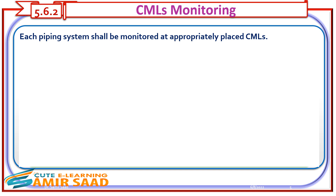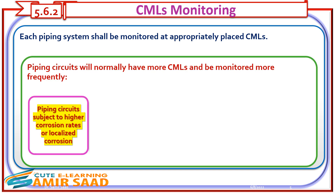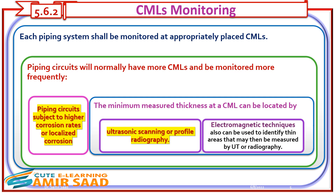Each piping system shall be monitored at appropriately placed CMLs. Piping circuits will normally have more CMLs and be monitored more frequently if they are subject to higher corrosion rates or localized corrosion. The minimum measured thickness at a CML can be located by ultrasonic scanning or profile radiography. Electromagnetic techniques can also be used to identify thin areas that may then be measured by UT or radiography.